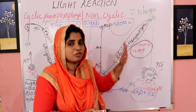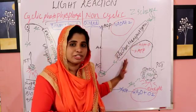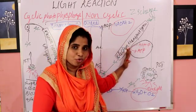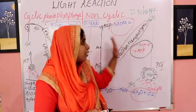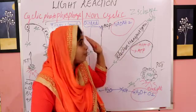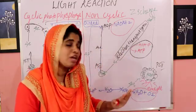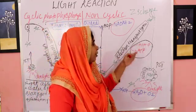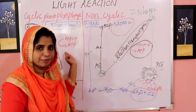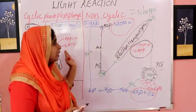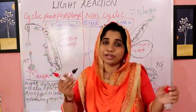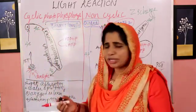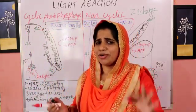Phosphorylation in the presence of light is known as photophosphorylation. Photophosphorylation can be cyclic or non-cyclic. Photophosphorylation produces ATP. This is how cyclic and non-cyclic electron transport works.